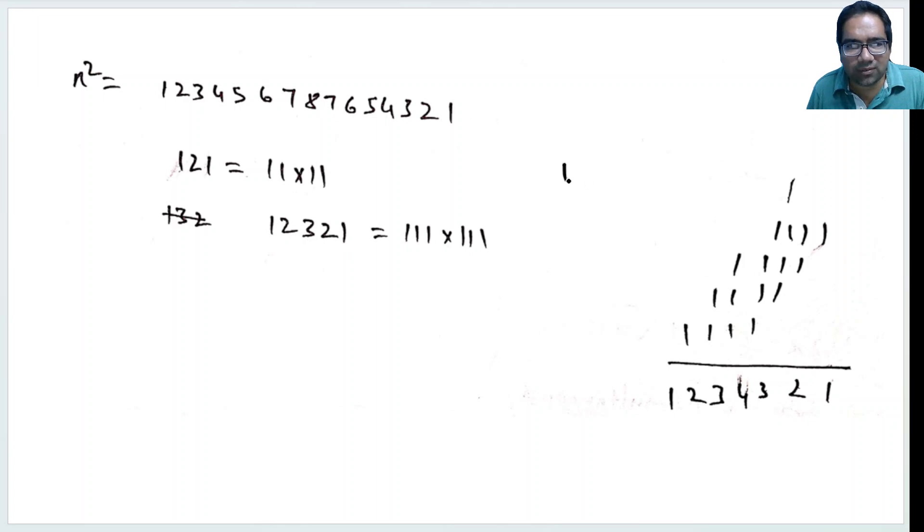For example, let's say 1111 times 1111. How do we do? We write 1 into 11, we write 4 times 1111. And then we start adding. Here 1, here 1 plus 1 is 2, here 1 plus 1 plus 1 is 3. Here 4 times, again 3 times, again 2 times, again 1 time. So the square of all 1s always follows this pattern.